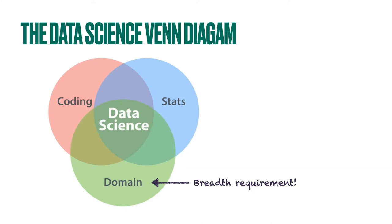Data science really does sit at the intersection of three circles: statistics, coding — the data science part — and domain-specific knowledge. Domain knowledge means knowing something about a field that actually generates the data and the questions you want to answer using data, whether that's biology, astronomy, economics, English literature, or whatever it may be.